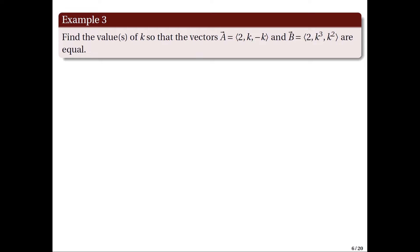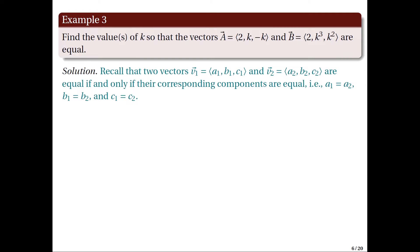Moving on to the third example: find the value or values of K so that vector A = (2, K, −K) equals vector B = (2, K³, K²). First, recall that two vectors are equal if and only if their corresponding components are equal. The first components are both 2, so 2 = 2, which is true for any value of K.